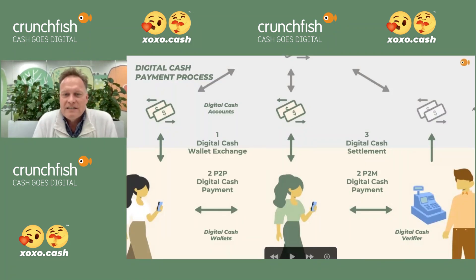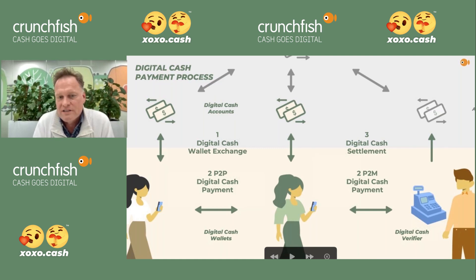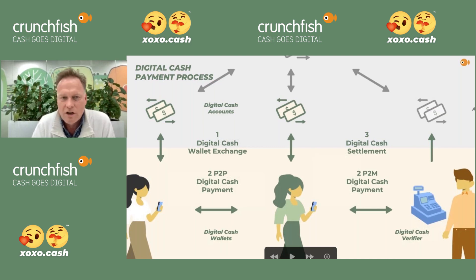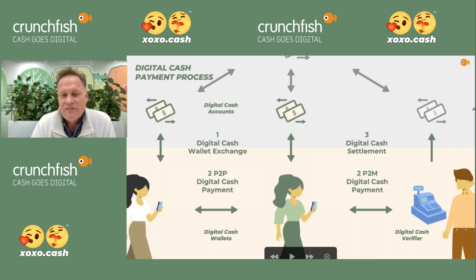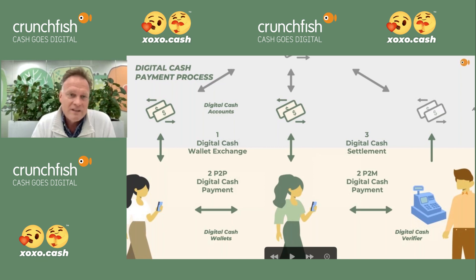Zooming in on the picture, there are three steps. Step one is the digital cash wallet exchange — the provisioning of rules that the digital cash wallet will operate under, including communication between the digital cash account and the wallet, topping up the wallet, and setting rules such as how many transactions are allowed before going online and what the maximum amount is. The issuer sets up those rules.